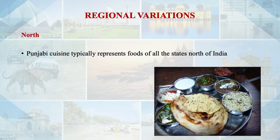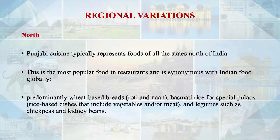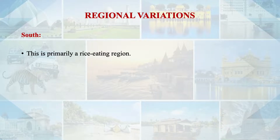Now let us look at regional variations in Indian food. A large number of Indians are vegetarian. In the North, Punjabi cuisine represents food of most northern states and is very popular globally. This cuisine is predominantly wheat-based with roti and naan, basmati rice, special pulaos, rice-based dishes with vegetables, and kidney beans. Dairy products such as paneer, yogurt, butter and ghee are also extensively used. On the other hand, Southern India is primarily a rice-eating region with a wide variety of dal, soups and vegetable dishes.